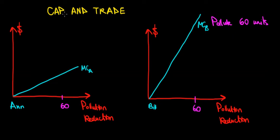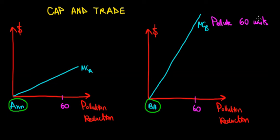Let's work on the concept of cap and trade policy to prevent pollution. We assume two players in the market, N and Bill, that produce output which generates pollution. The government sets a limit of 60 units of pollution — that limit is the 'cap' from the title. There is a cap at 60 units of pollution.